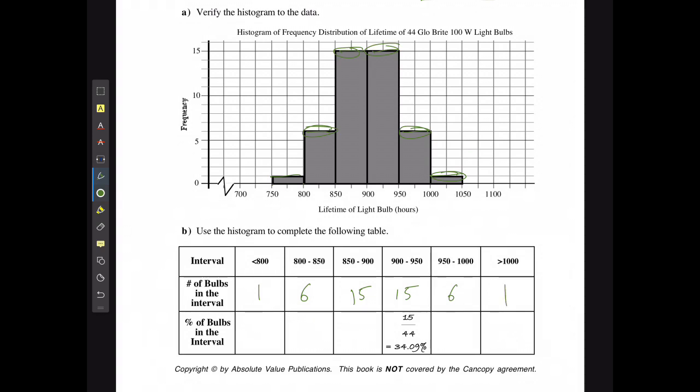Now if we had 44 total examples, then the percentage of bulbs that fit in this range is going to be 1 over 44 which equals 2.27 percent. This one is going to be 6 out of 44 which gives me 13.64 percent.